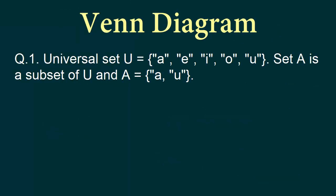So this is the first question. Our universal set is given as A, E, I, O, U — these are the vowels in the English language — and our set A is a subset of U, where set A contains the elements A and U. So how are we going to draw this diagram?